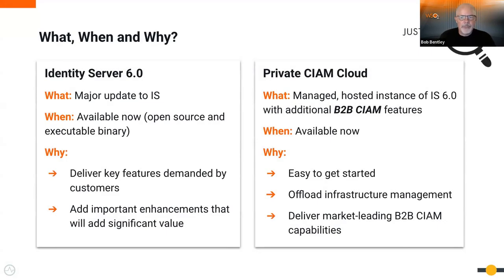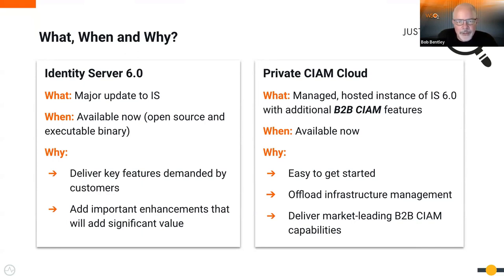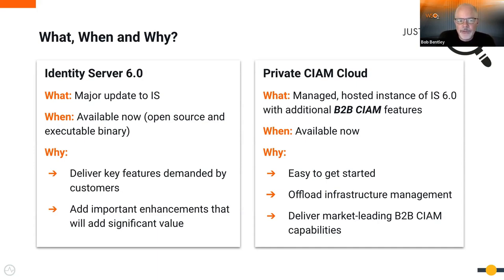Let's get right to the basic facts of what, when, and why. Identity Server 6 is a major update to Identity Server — a follow-on from our five series, the last major version. It's available right now, both as open source and as an executable binary from WSO2. In addition to routine maintenance and bug fixes, we're delivering key features demanded by customers, as well as important enhancements that we think are really going to add value.